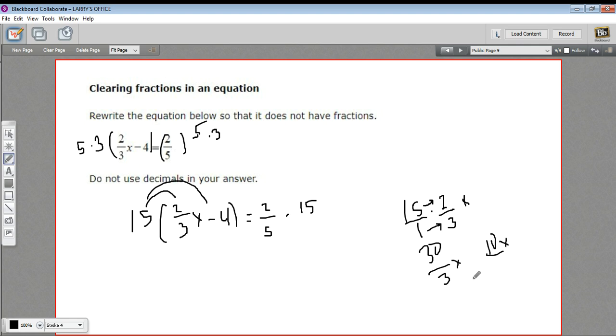Just plain old 10x, no fraction there. And then my second term, 15 times negative 4 is negative 60. So I get 10x minus 60. Much simpler.